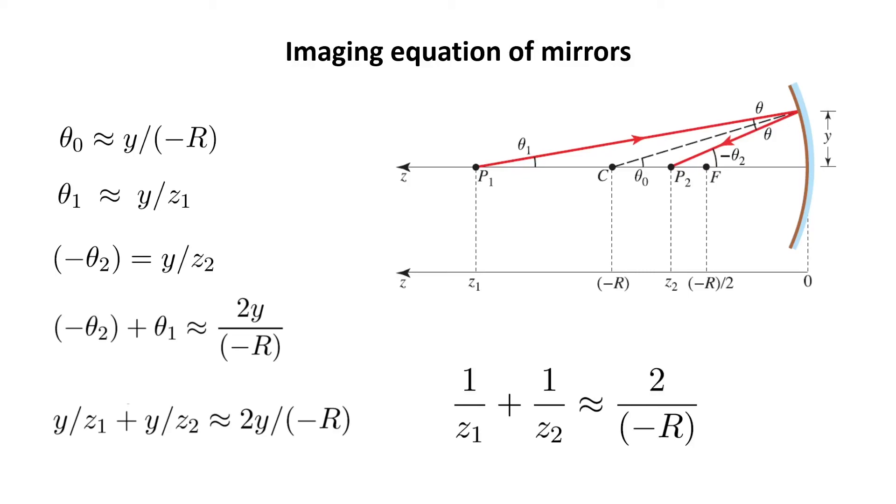If the mirror was convex, then the radius would be positive.